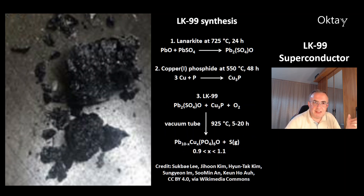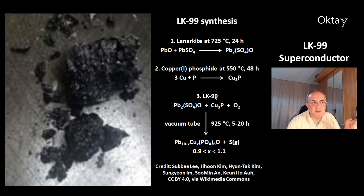This is the synthesis of LK99. The first step is the synthesis of lanarkite at 725 degrees Celsius from lead oxide and lead sulfate. The second step is the synthesis of copper phosphate from the elements at 550 degrees Celsius. The third step is the synthesis of LK99 from lanarkite, copper phosphate, and oxygen in a vacuum tube — a redox reaction at 925 degrees Celsius. This gives you LK99, and the by-product is sulfur.